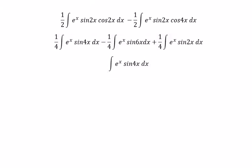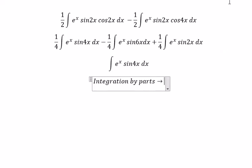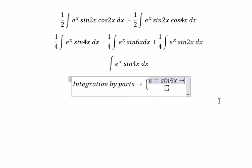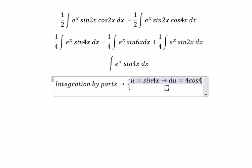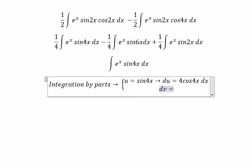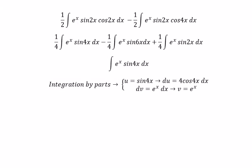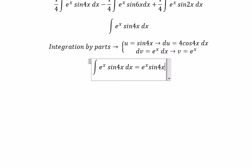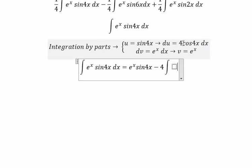This one, we can use integration by parts. So you have u and dv. u equals to sine 4x, du equals to 4 cosine 4x dx. dv equals to e to the power of s dx. So v equals to e to the power of s. So we have u multiplied with v, and we have negative 4, and we have the integral of cosine 4x.